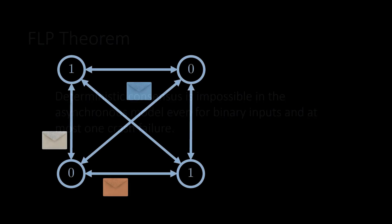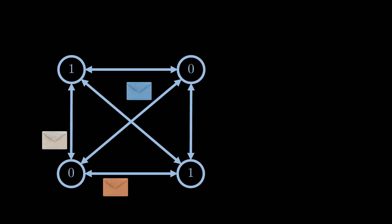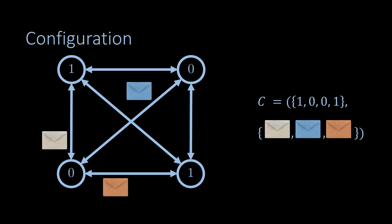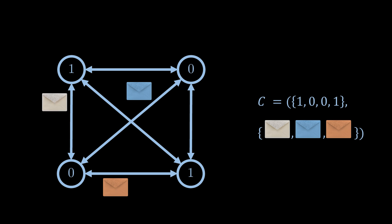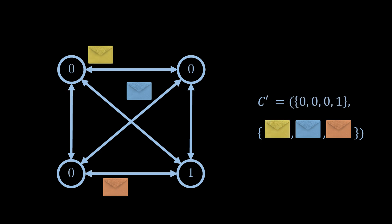Let us now try to understand why consensus is impossible in this scenario. We introduce the concept of a configuration, which is the state of all nodes together with all messages that are currently in transit — that is, all messages that have been sent but have not arrived yet. As mentioned before, reaching consensus is even impossible for binary input, so we only consider zeros and ones as input. When the next message is received, the state of the receiving node may change and the message is removed from the configuration.